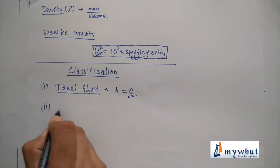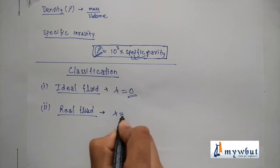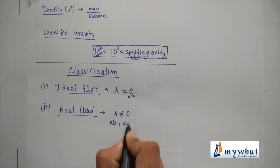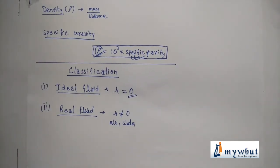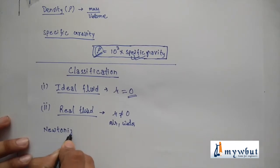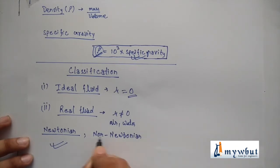The second type is non-ideal or real fluid, where viscosity is not equal to zero. Generally this includes air, water, and in fact every kind of fluid, because practically ideal fluid does not exist. The third type is Newtonian fluid — a fluid that follows Newton's law of viscosity. The last type is non-Newtonian fluid — a fluid which does not follow Newton's law of viscosity.